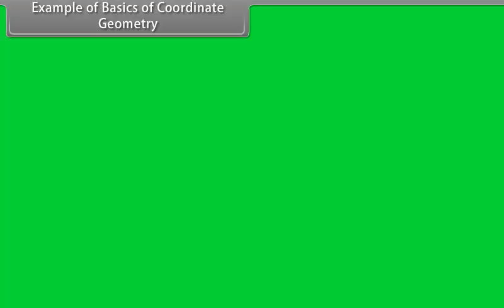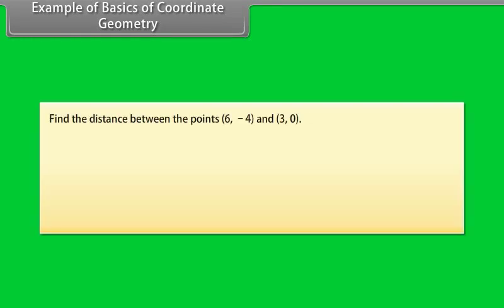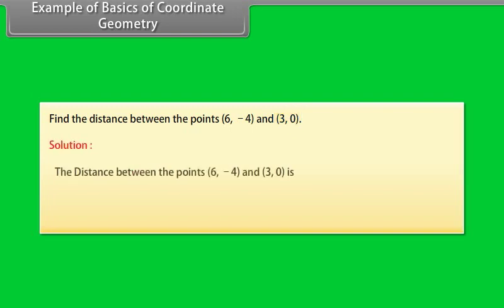Examples of basics of coordinate geometry. Example: Find the distance between the points (6, −4) and (3, 0). Solution: The distance between the points (6, −4) and (3, 0) is 5 units.